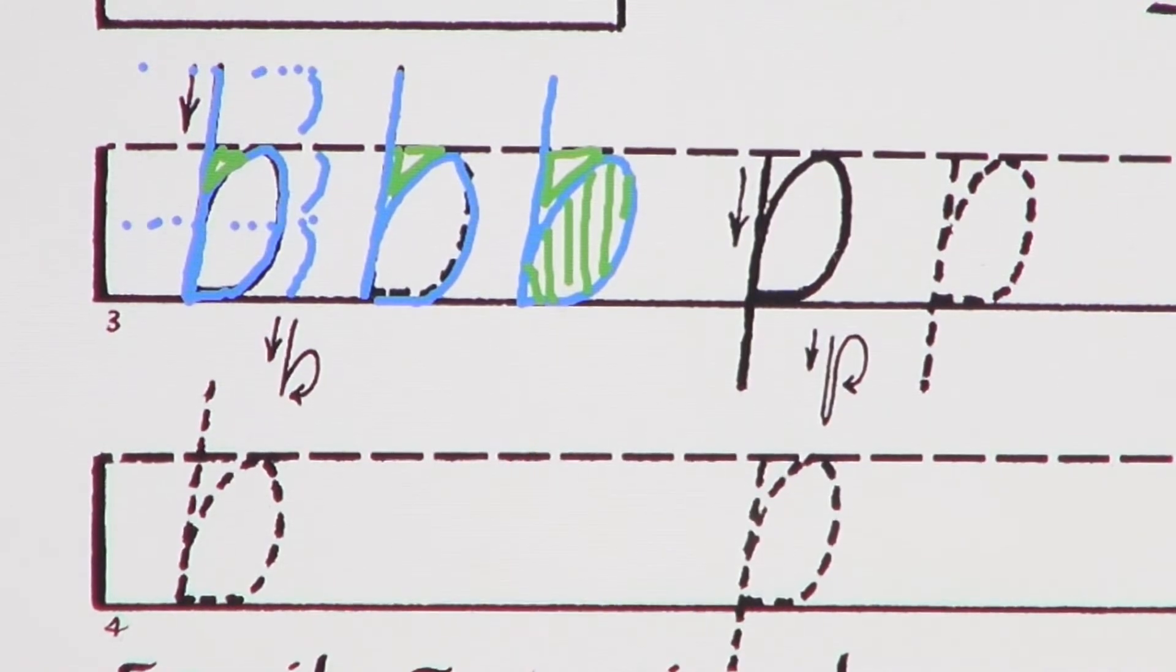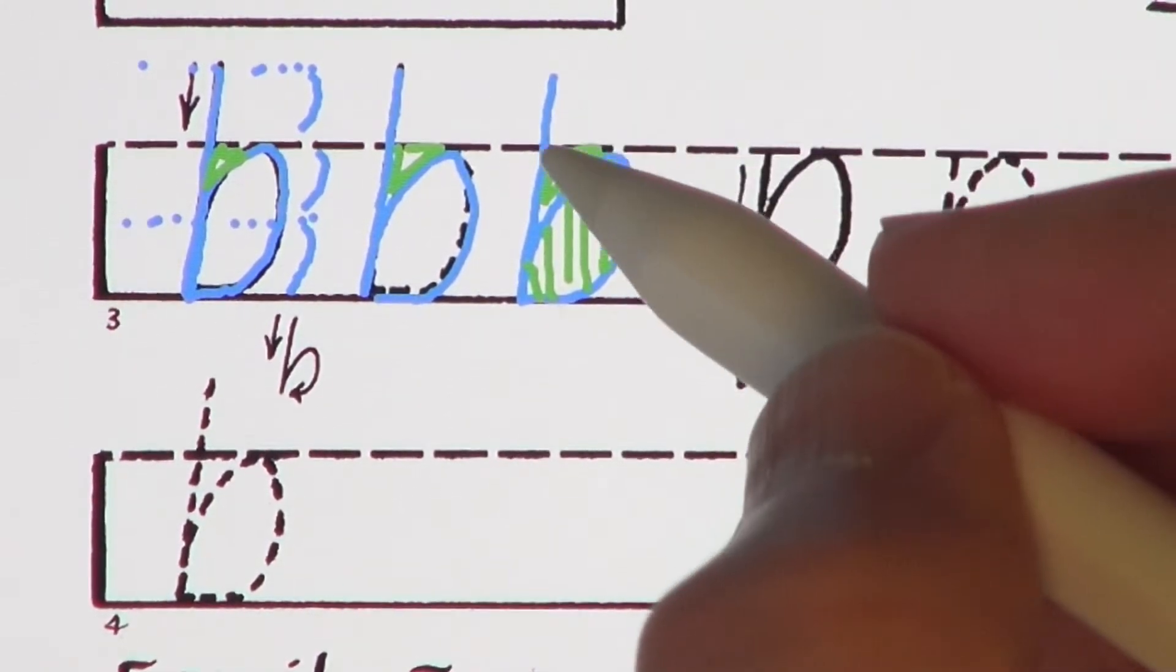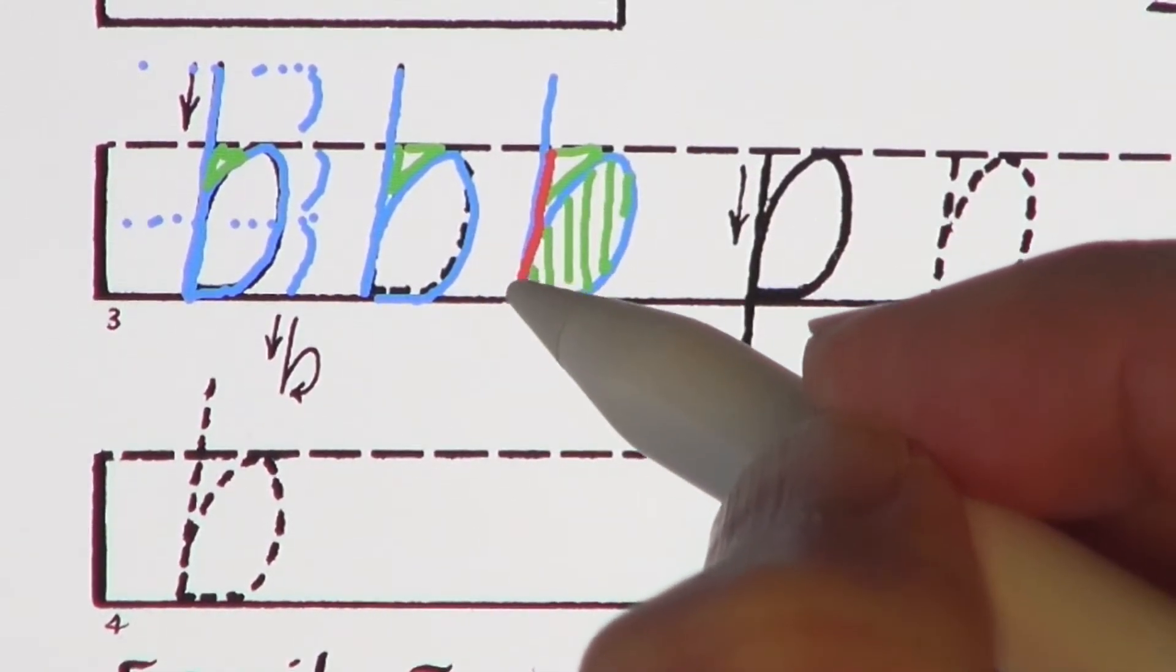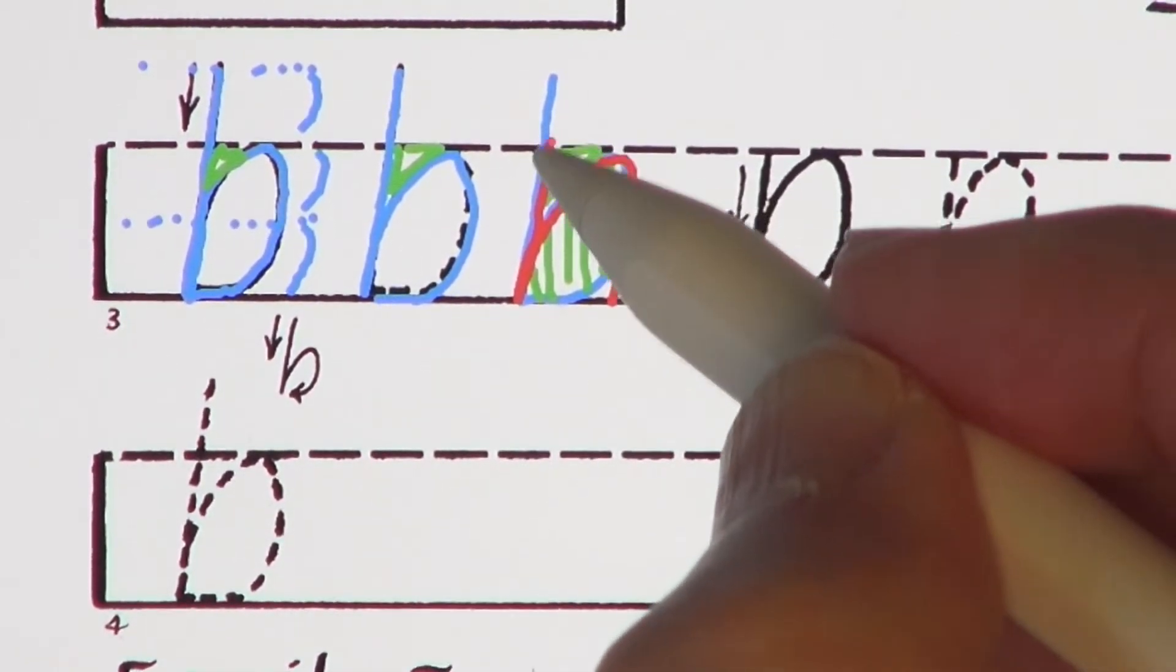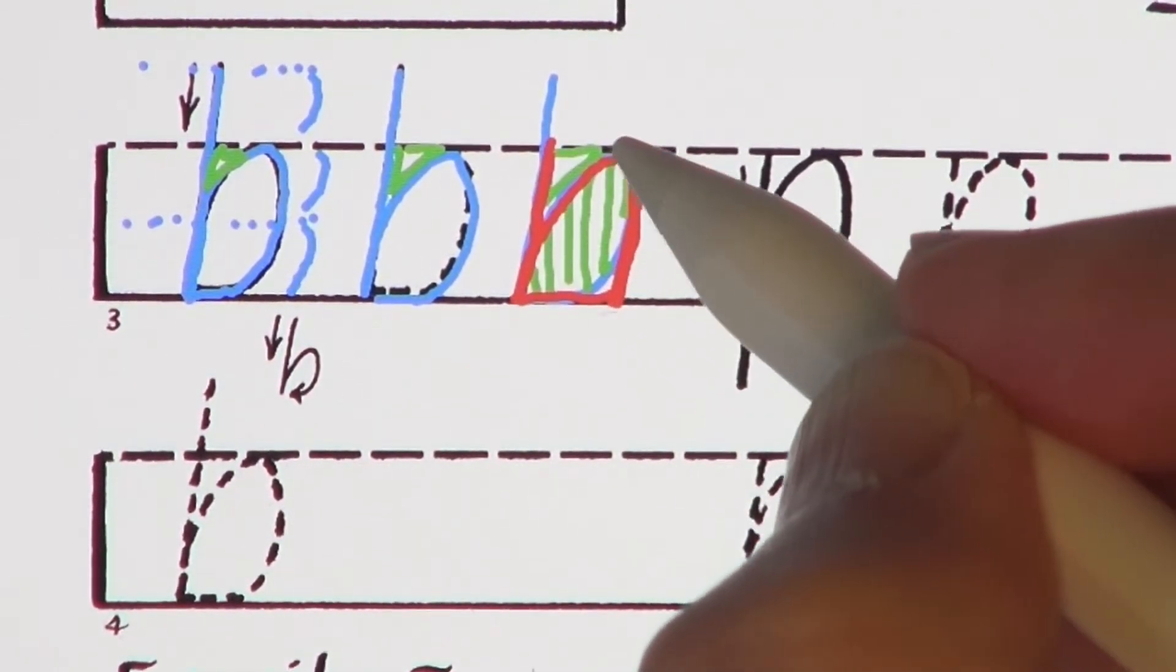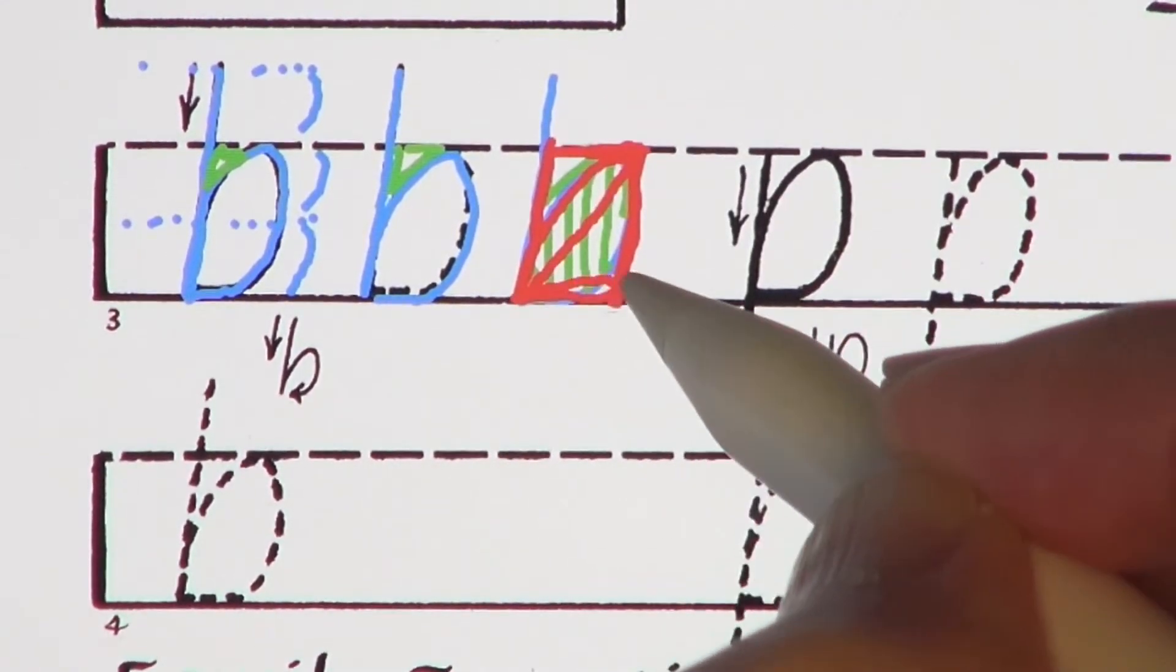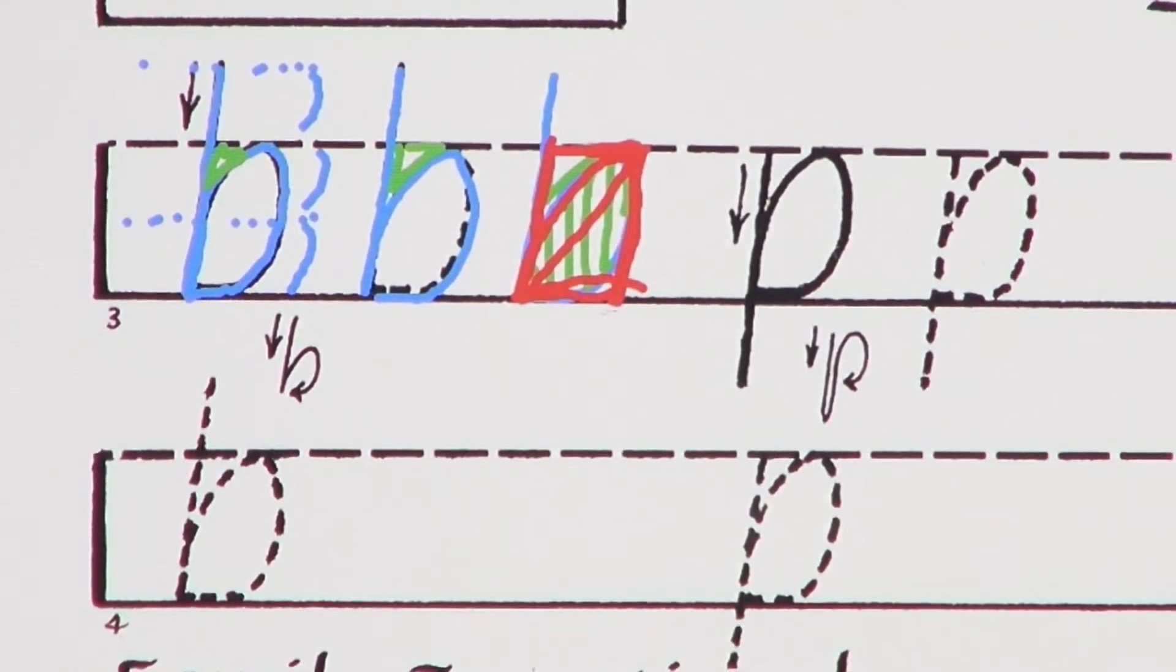How wide should you make this letter? Aim for a width that matches your lowercase n. In fact, the body of b fits inside the same golden rectangle that most other lowercase letters do, including n and z.